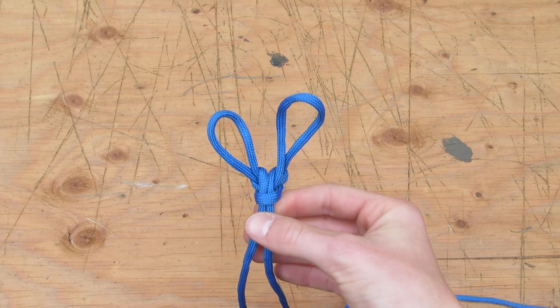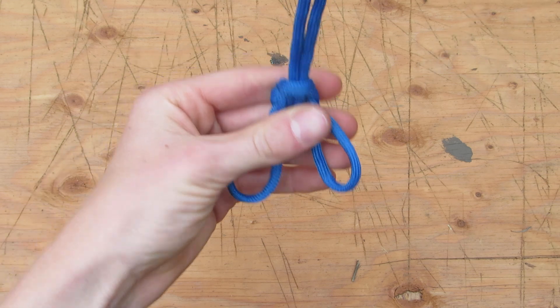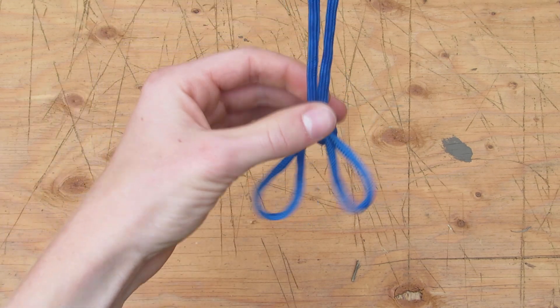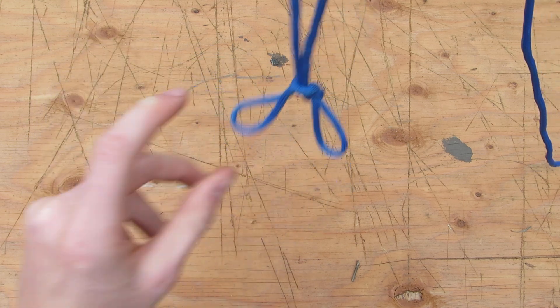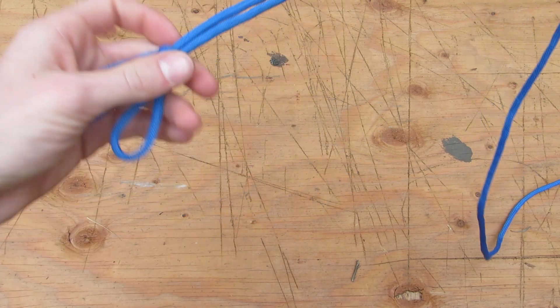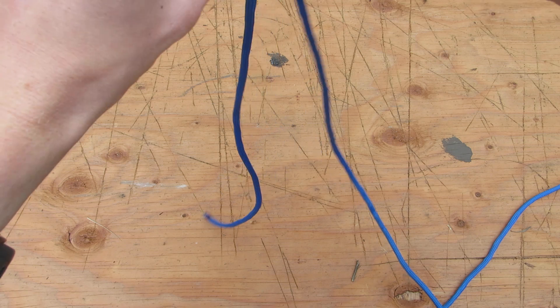That creates the Spanish bowline. I can use it to hang something if I want to, even separate loops like that. The Spanish bowline actually has nothing to do with the actual bowline.